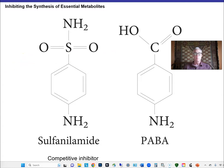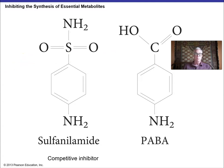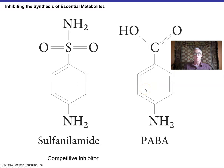Sulfa drugs and trimethoprim: sulfanilamide is structurally very similar to para-aminobenzoic acid (PABA) and acts as a competitive inhibitor. Bacterial cells need this reaction with PABA to make dihydrofolate, an intermediate needed for many metabolic pathways. Trimethoprim works on a different part of the same dihydrofolate synthesis pathway.